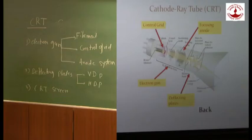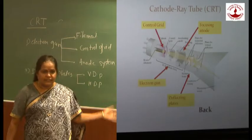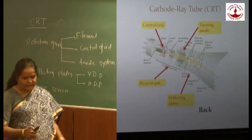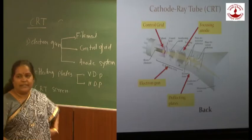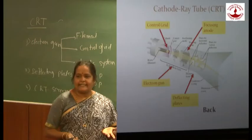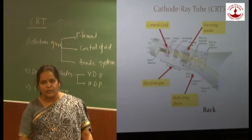The electron gun produces a very sharply focused and high-speed electron beam which strikes on the CRT screen. The velocity of these electrons is compared to that of a bullet fired from a gun — the same speed. The electron gun consists of a filament. The filament is a simple wire — it may be nickel, platinum, or copper — which gets heated when current passes through it. Because of this heat, electrons are emitted from the wire. These are called thermoelectrons — electrons emitted due to heat — and they scatter in all directions.